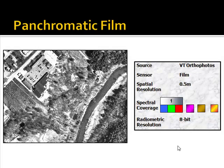Now let's look at some examples of remotely sensed data, specifically the properties of various sensors. For the legend: we'll look at source, sensor, spatial resolution, spectral coverage, and radiometric resolution. In the spectral coverage legend, gray scale indicates panchromatic band; blue, green, and red indicate corresponding bands; magenta indicates near-infrared; dark yellow indicates short and mid-infrared; and the purple-to-yellow gradient indicates thermal coverage.